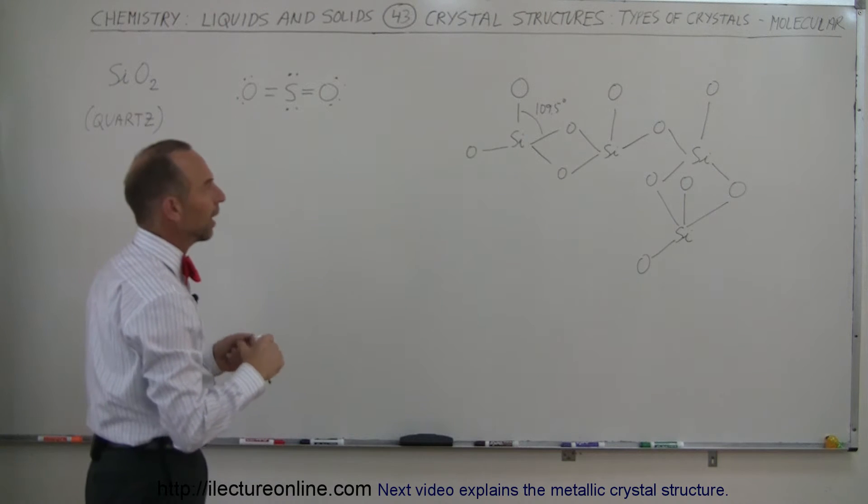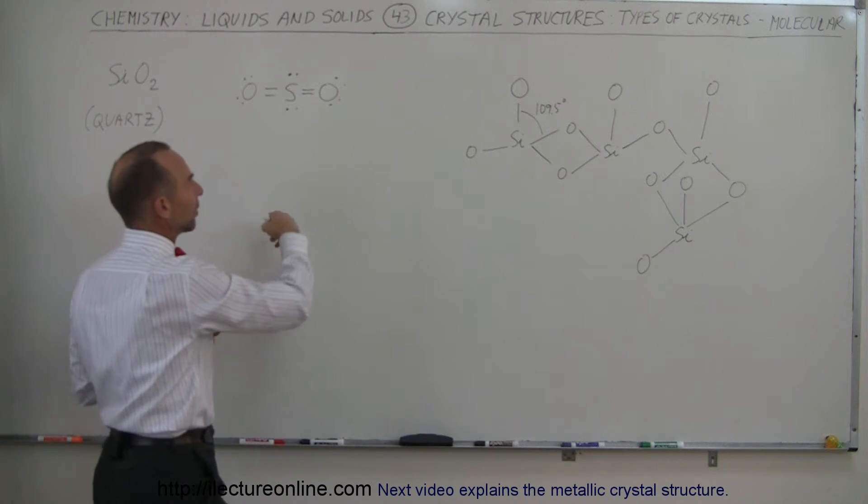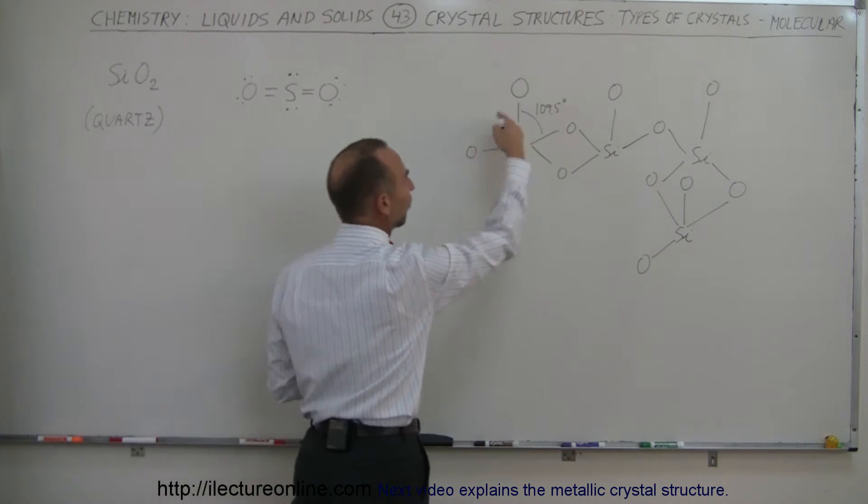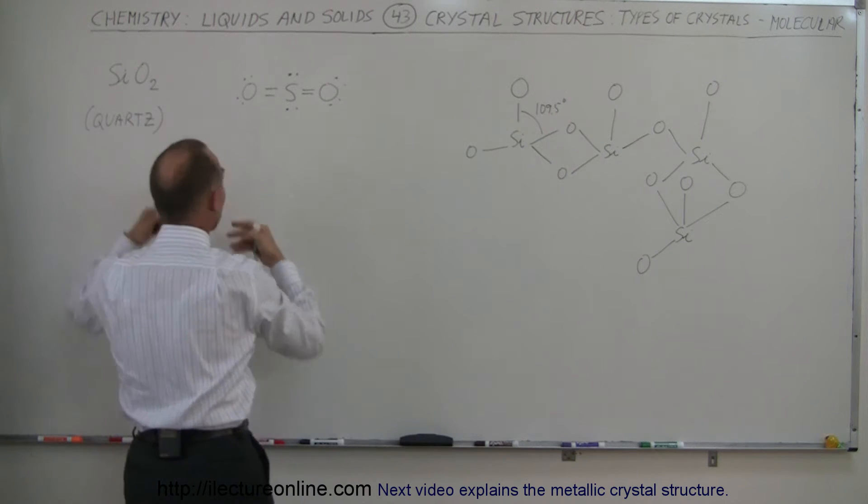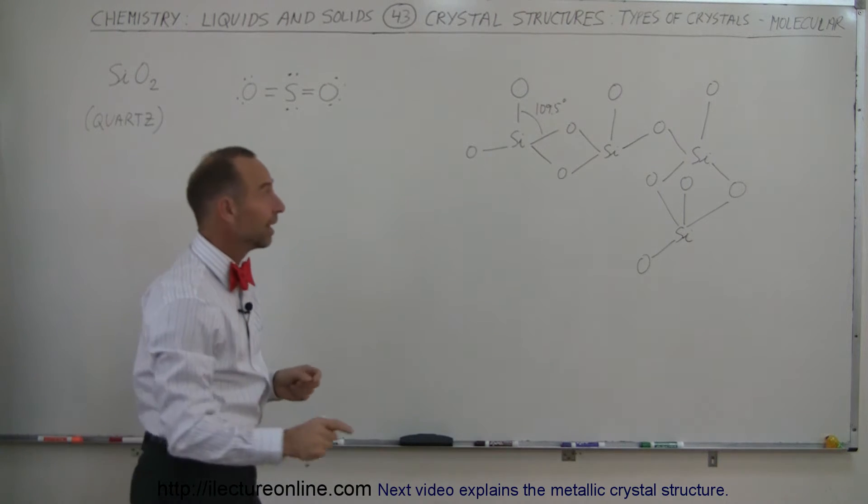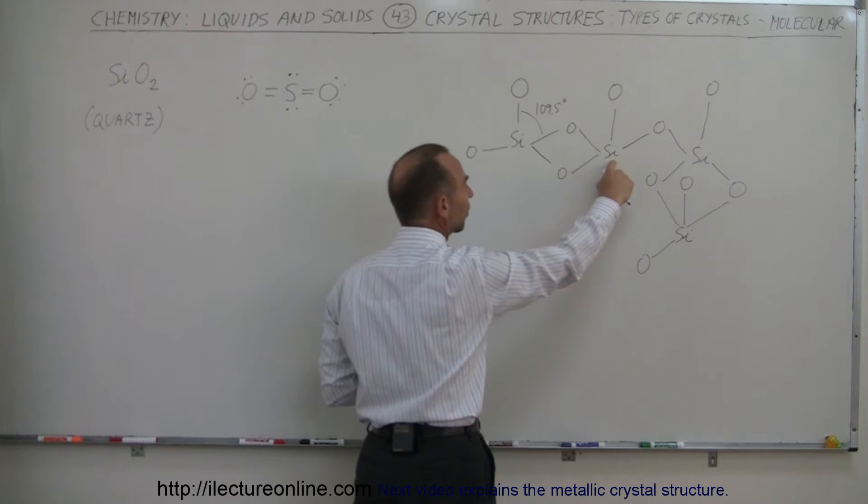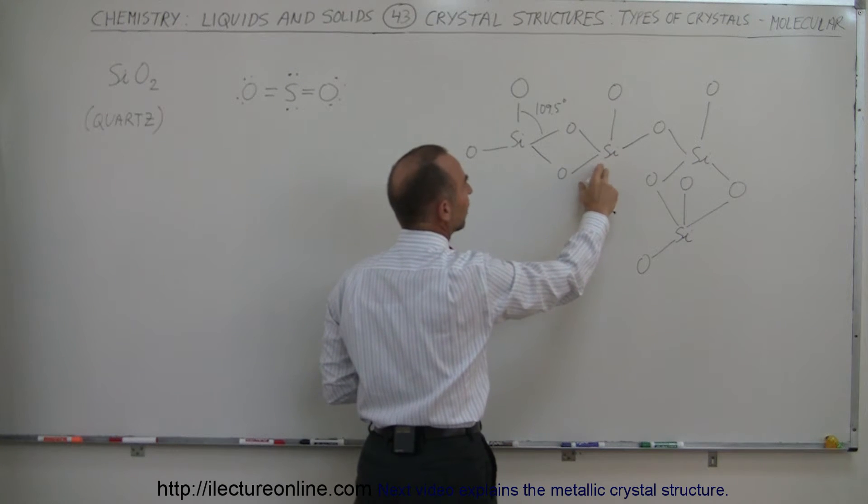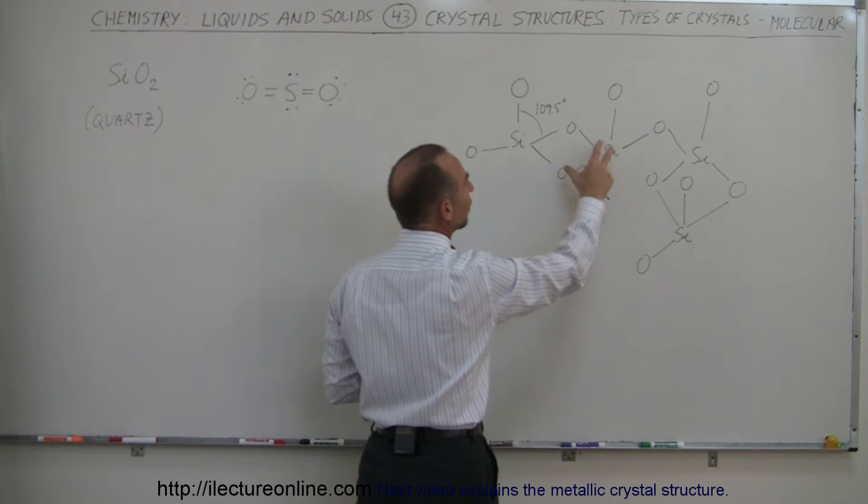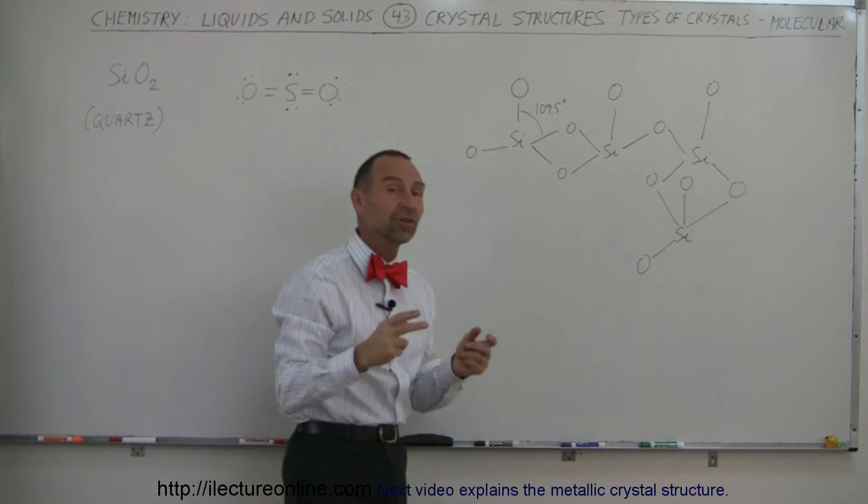So how can you then have silicon dioxide, because here it seems like you have one silicon and four oxygens, so that doesn't quite match up to the formula. What happens is that two of those oxygens here are also connected to another silicon right here. So you can see that in the end there'll only be a two to one ratio between oxygen and silicon.